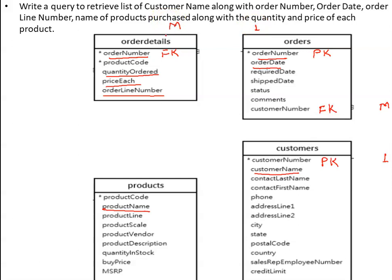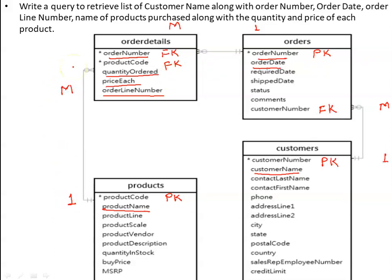What about the products table — it is associated with which other relation? There is an association between the products table and the order details table. In the products relation, the product code is acting as a primary key, which is acting as a foreign key in the order details table. So here also we have a one-to-many relation. That means all four tables are related based on primary key and foreign key associations.